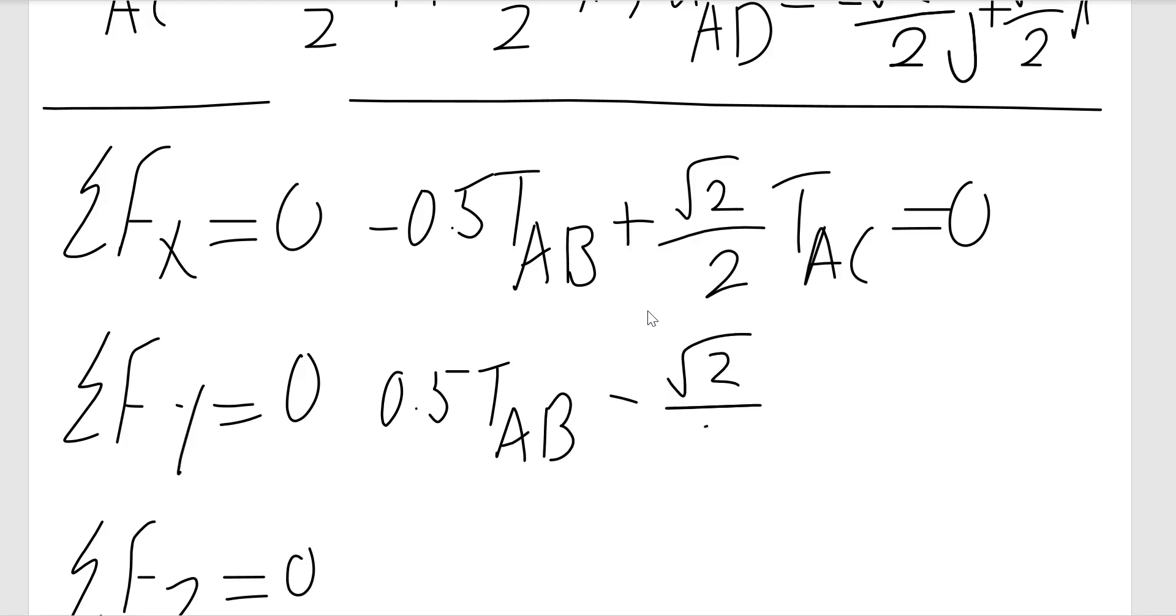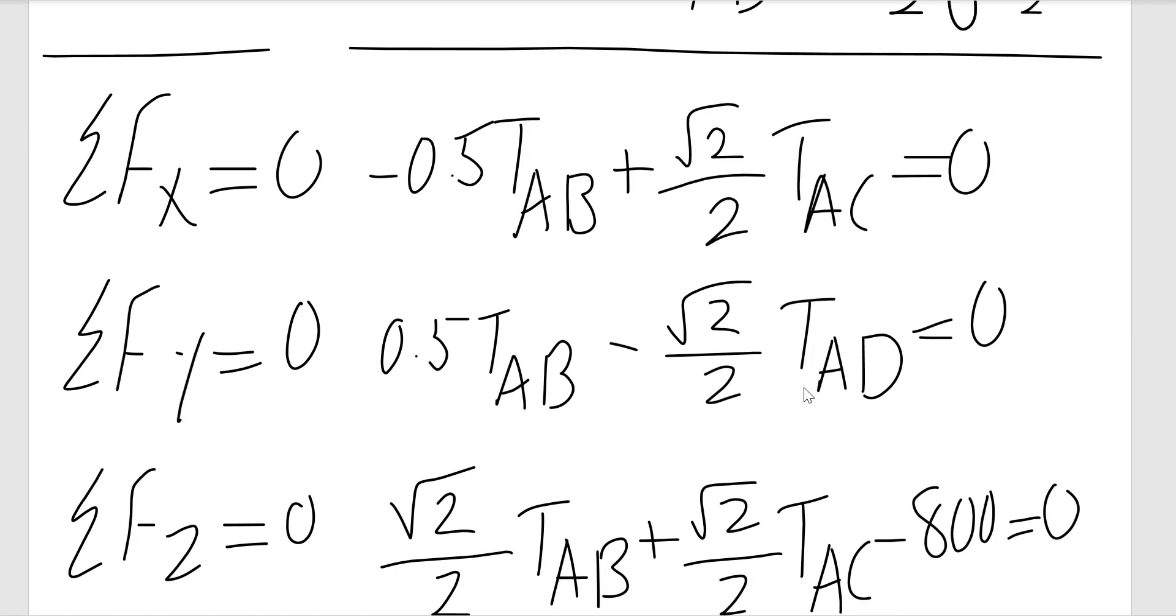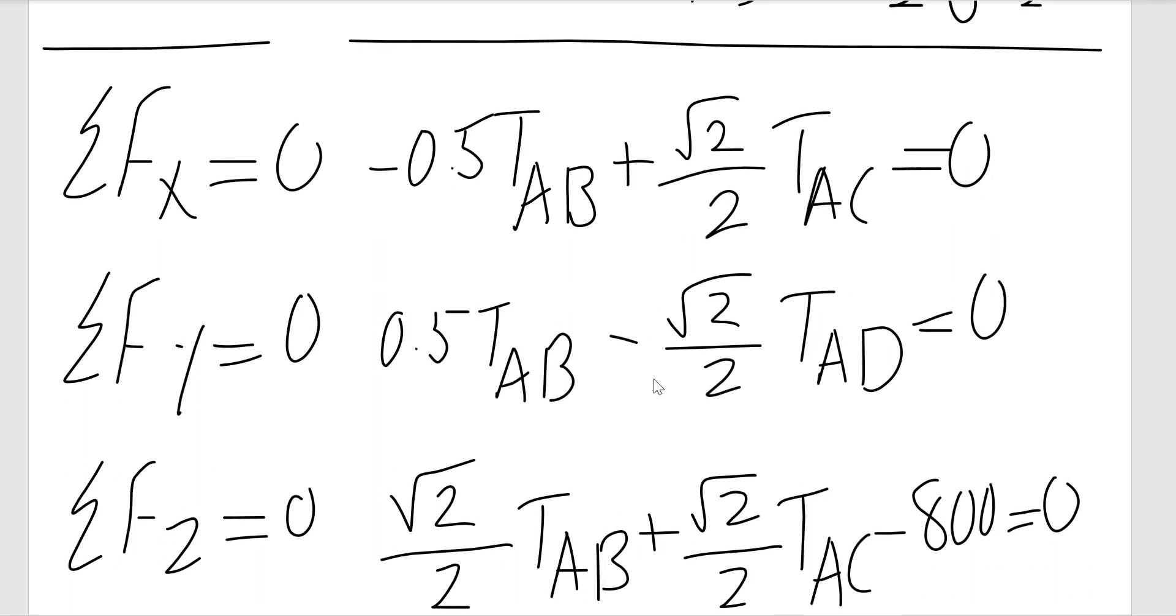And the last equation, the Z equation: (√2/2) TAB + (√2/2) TAC minus 800 equals 0. So I have three equations and three unknowns. I can easily find it.